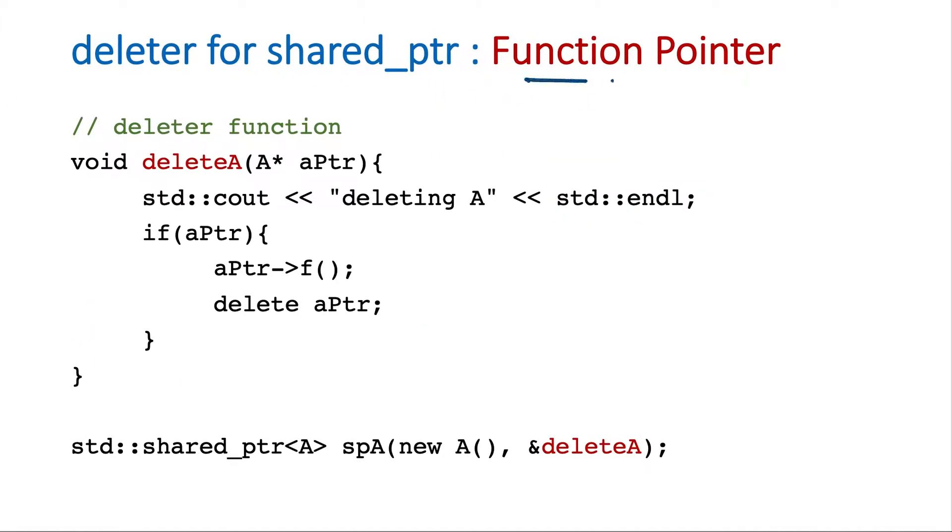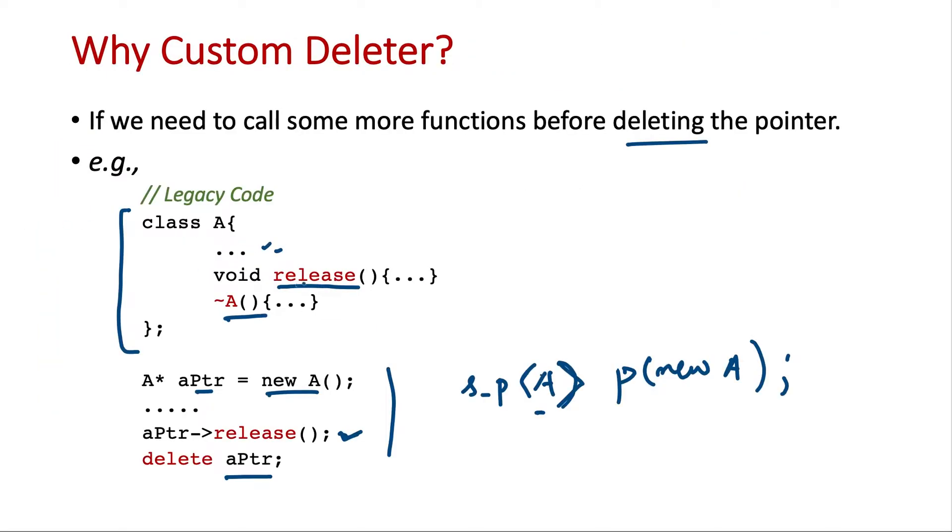So first let's see the function pointer case. So here we define a deleter function which will take a pointer of the same class as we are creating the smart pointer, the shared pointer. And here we can do whatever we want. We just inserted one log. Then we called some custom function on that class. This may be similar to this release function.